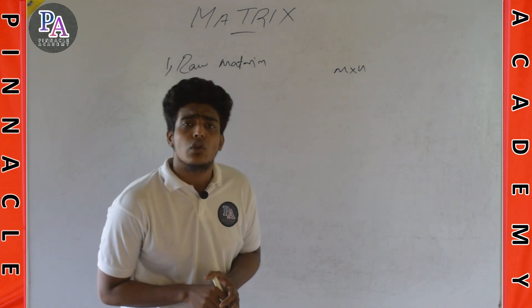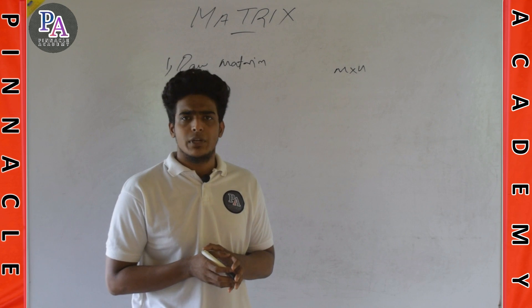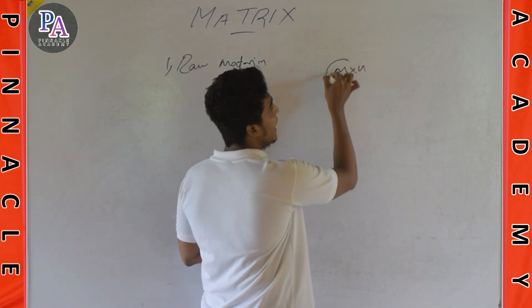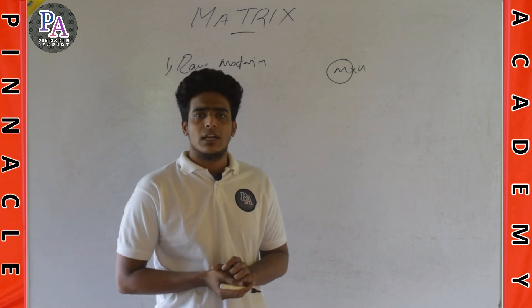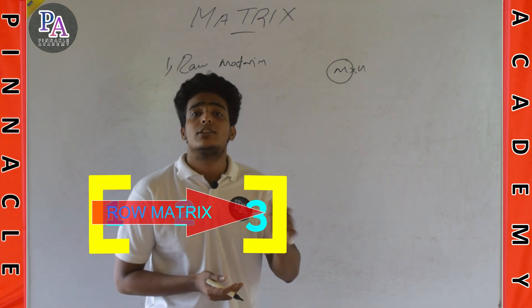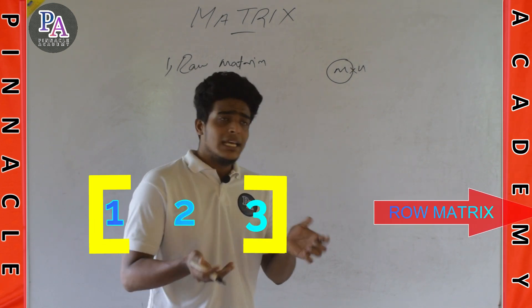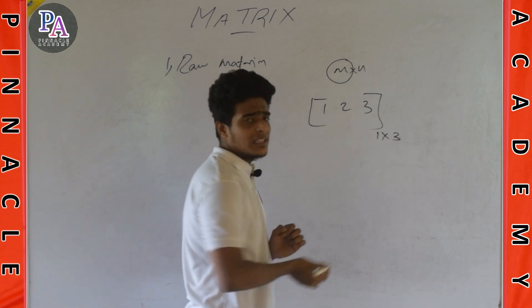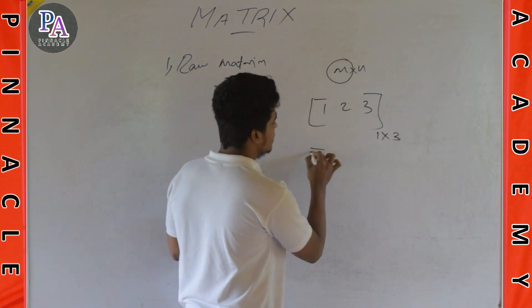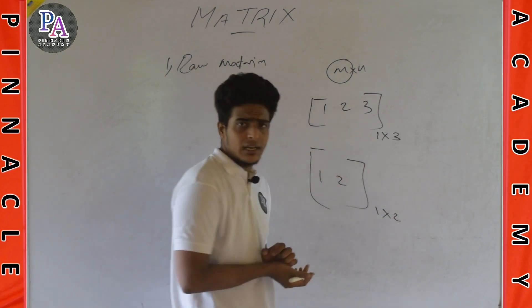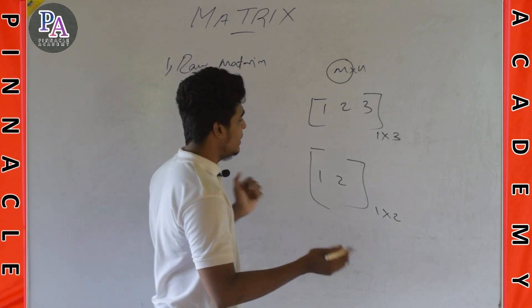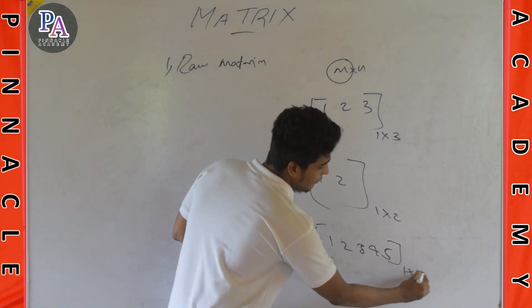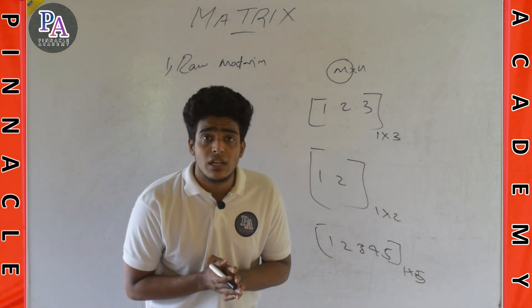What is a row matrix? We can consider any matrix. The number of rows is M. What is a row matrix? One, two, three — that is a 1 by 3 matrix. One, two — that is 1 by 2. One, two, three, four, five — that is 1 by 5. We don't consider the number of columns for a row matrix.